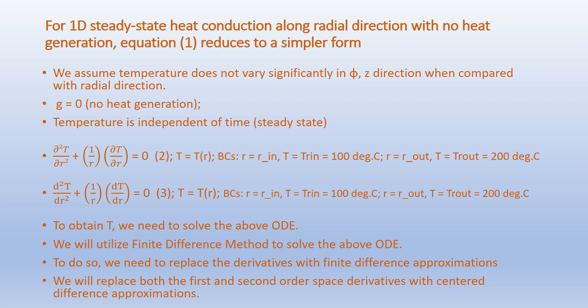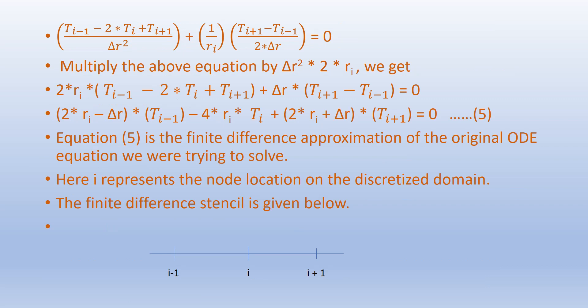The above partial differential equation can be shown as an ordinary differential equation. To obtain T we need to solve this ODE using the finite difference method. We replace the derivatives with finite difference approximations — both the first and second order space derivatives are replaced with centered difference approximations. Accordingly: (T_{i-1} - 2T_i + T_{i+1}) / ΔR² + (1/R_i) × (T_{i+1} - T_{i-1}) / (2ΔR) = 0.